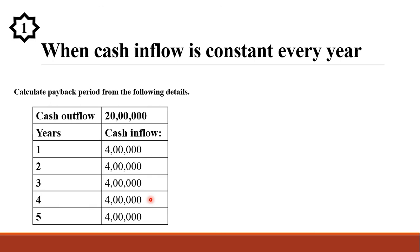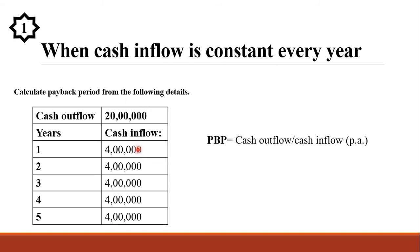Since the annual cash inflow is constant, the payback period is calculated using the formula: payback period equals cash outflow divided by cash inflow per annum. In this sum, cash outflow is 20 lakhs and cash inflow per annum is rupees 4 lakhs. So payback period equals 20 lakhs divided by 4 lakhs, and 20 divided by 4 gives an answer of 5 years.